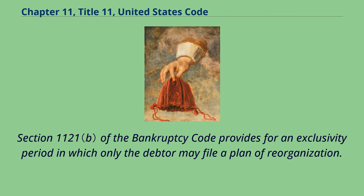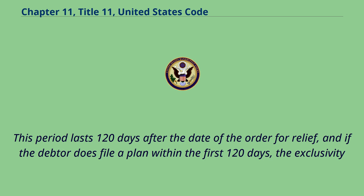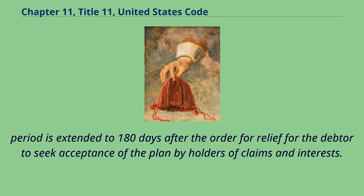Section 1121 of the Bankruptcy Code provides for an exclusivity period in which only the debtor may file a plan of reorganization. This period lasts 120 days after the date of the order for relief, and if the debtor does file a plan within the first 120 days, the exclusivity period is extended to 180 days after the order for relief for the debtor to seek acceptance of the plan by holders of claims and interests.